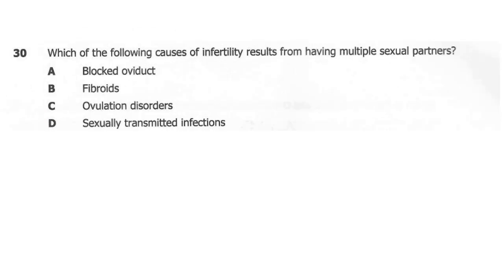Question 30. Which of the following causes of infertility results from having multiple sexual partners? A: blocked oviduct. B: fibroids. C: ovulation disorders. D: sexually transmitted infections. The correct answer here is D. Infertility can occur due to having a sexually transmitted infection such as gonorrhea and syphilis, which can be caused by having multiple sexual partners with unprotected intercourse. STIs can block the oviducts or sperm ducts, leading to infertility.